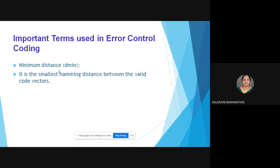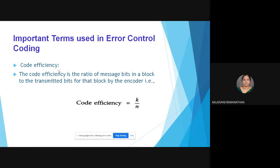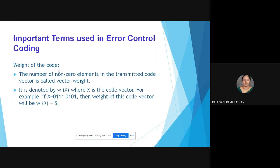The minimum distance is the smallest Hamming distance between the various code vectors. Code efficiency is the ratio of message bits in a block to the transmitted bits for that block, given mathematically as k/n. The weight of a code vector is the number of nonzero elements in the transmitted code vector, denoted w(x). For example, if the code is 0111010 1, the weight w(x) = 5, since it has five 1s in the code.